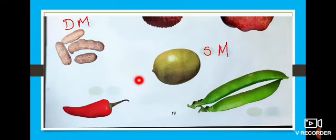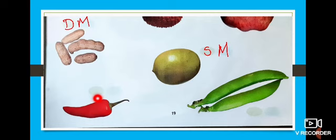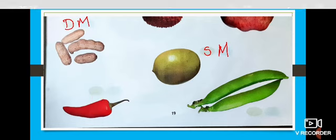And look at the next one. What is this, children? Chili. Very good. Red chili. Is it a dry one or a soft and juicy one? It is a dry one. So you have to write D. And how many seeds does chili have? Many seeds. Very good. So you have to write M.